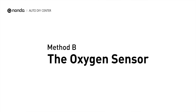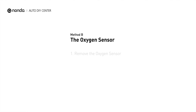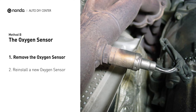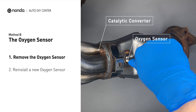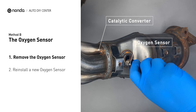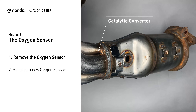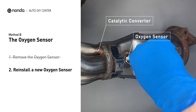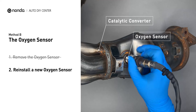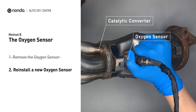Method B: Oxygen sensor. The oxygen sensor is located in the exhaust manifold of the car. Remove the oxygen sensor from the catalytic converter. Reinstall a new oxygen sensor from the original equipment company and put it back on the catalytic converter.